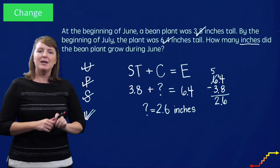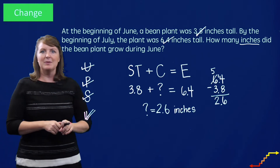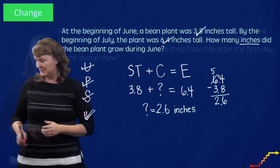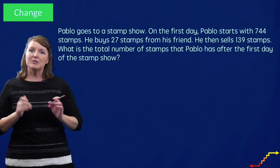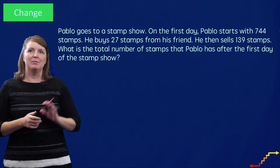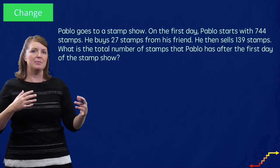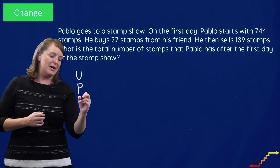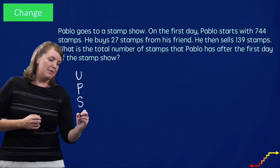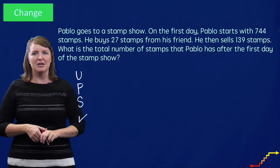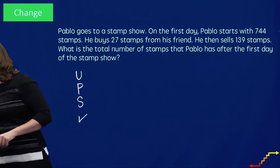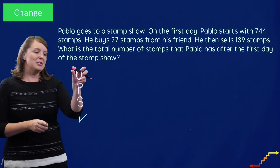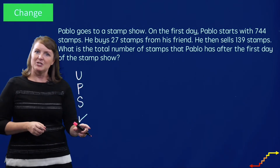Now give me a minute — I'm going to erase this and make it blank once again, and we're going to solve another type of change problem. Now let's look at this change problem. I see a mix of numbers and words, so I'm going to use my attack strategy. I always like to write my attack strategy here so I remember it. I'm going to understand, plan, solve, and check this problem.